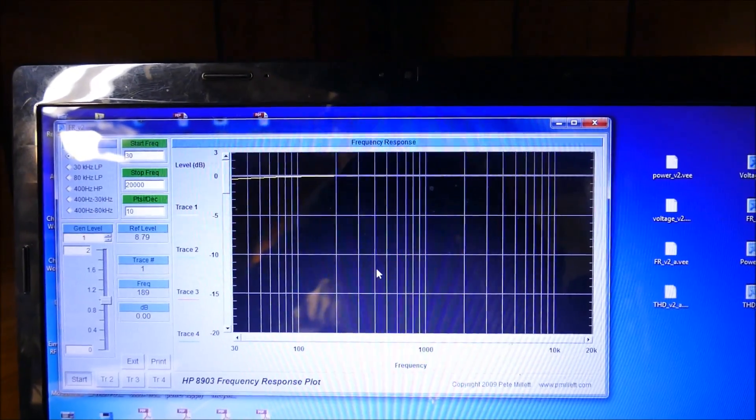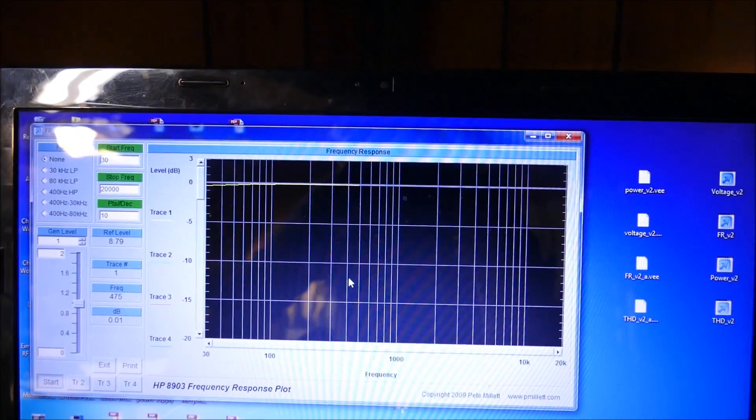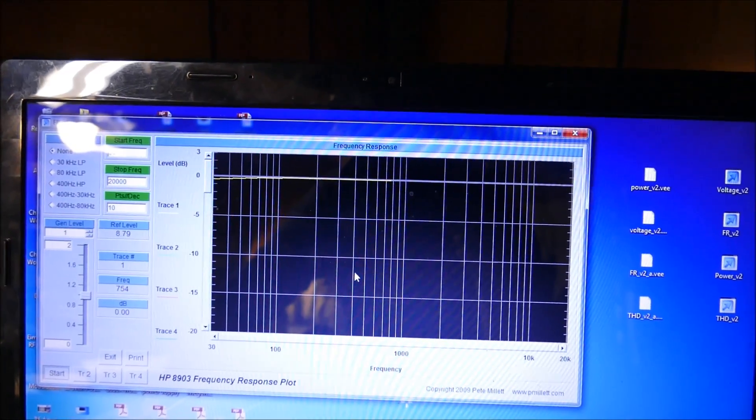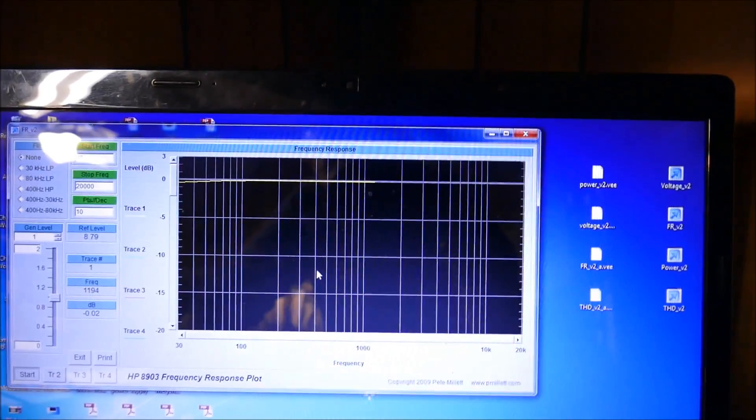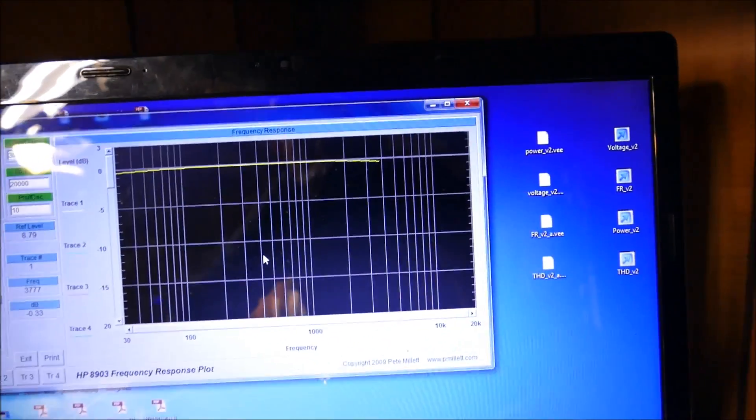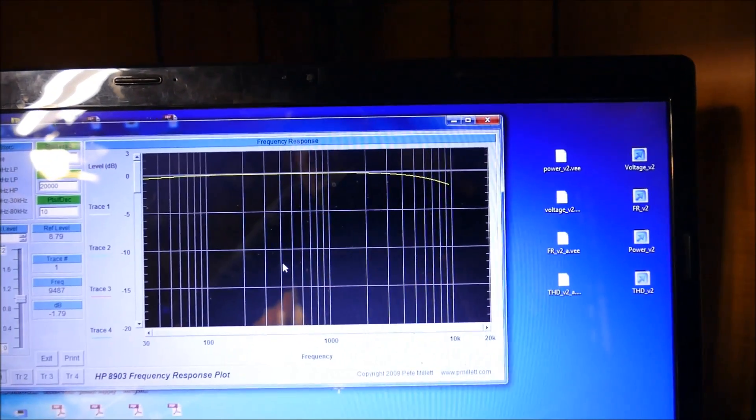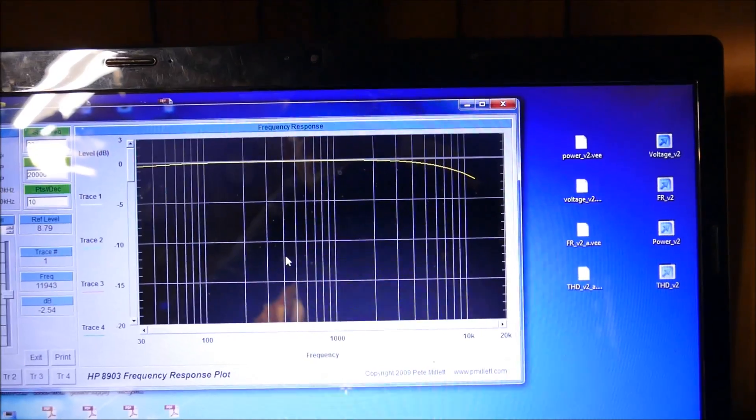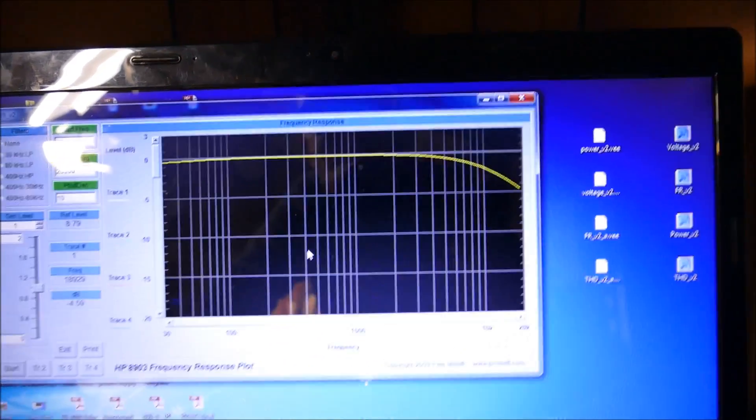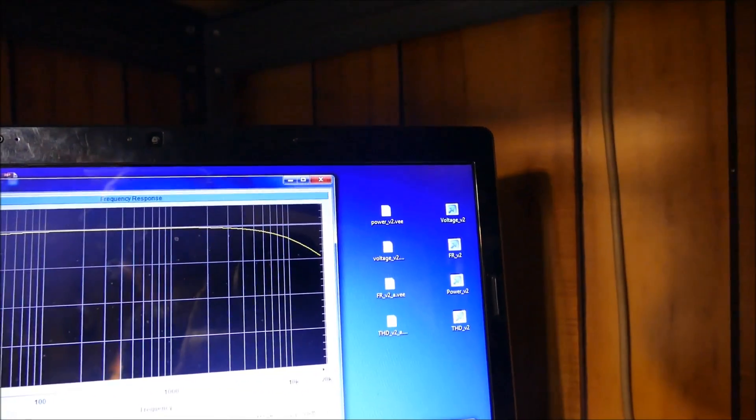The other one was down like 5 dB at out there at 20 kilohertz. Looks like this is not going to change so much. Okay, so FR is the same FR plot. There we go, okay, there's the FR plot for the bad capacitor. That's where we are now. There's the THD for the bad capacitor.